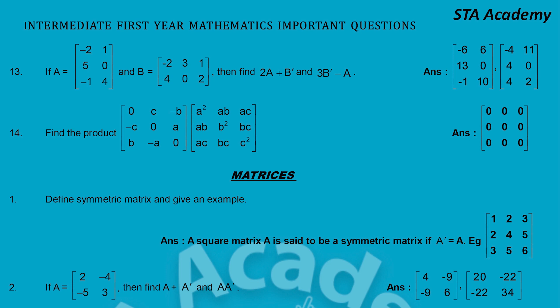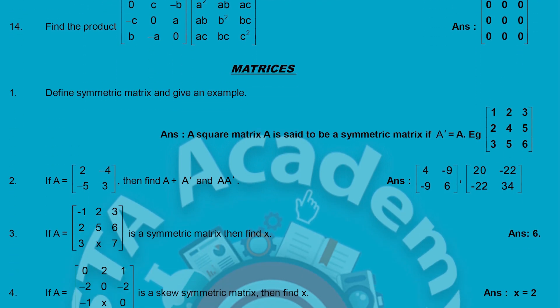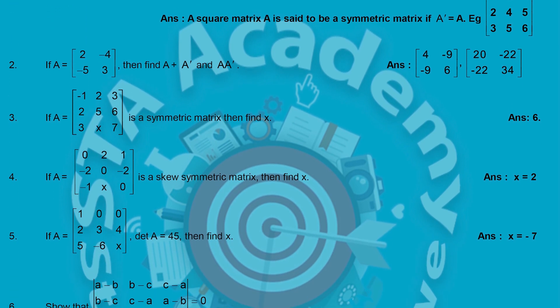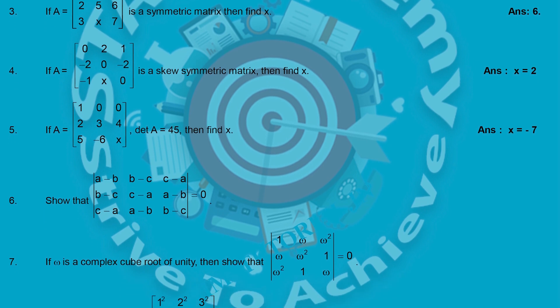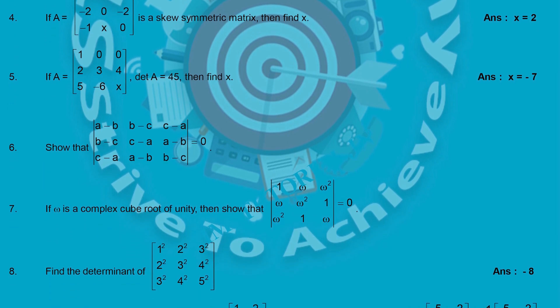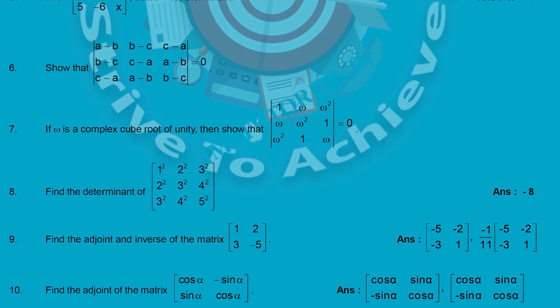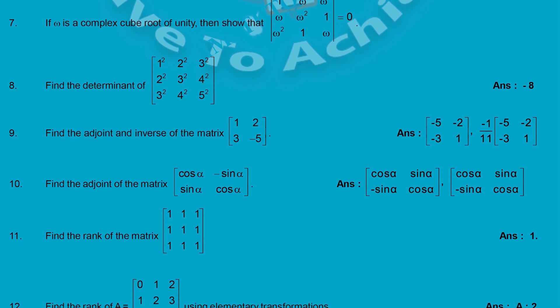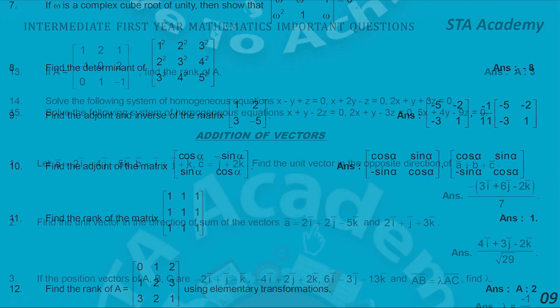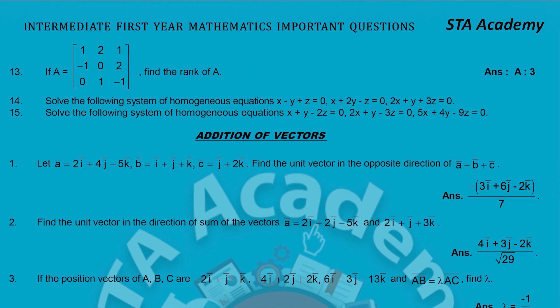After that, in the second section: define symmetry matrix and give an example — these are more VSAQs of Matrices. Questions 12 and 13 are there; 14th is a homogeneous equation. The 15th is the last VSAQ of Matrices. Mostly in IPE they will ask two VSAQs from Matrices. If you practice all these VSAQs it will give you 2 + 2 = 4 marks in your IPE exam.